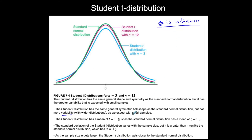The Student t-distribution has a mean of zero, but the standard deviation is not one. The standard deviation of the Student t-distribution varies with the sample size, so the shape — how high and how wide it goes — is dependent on sample size.